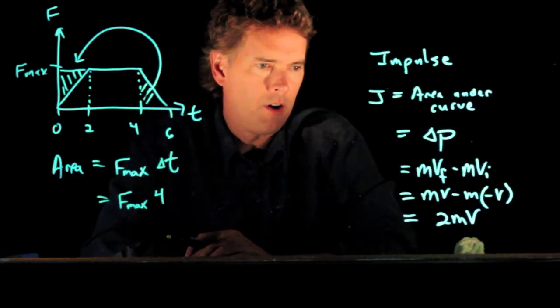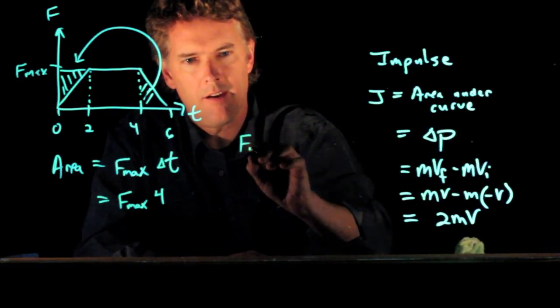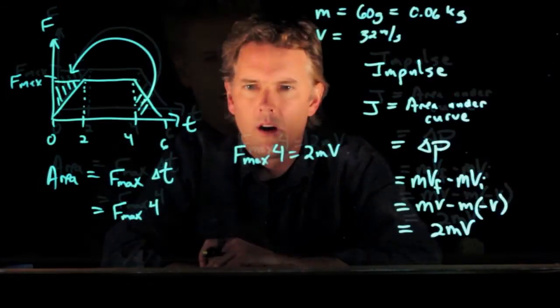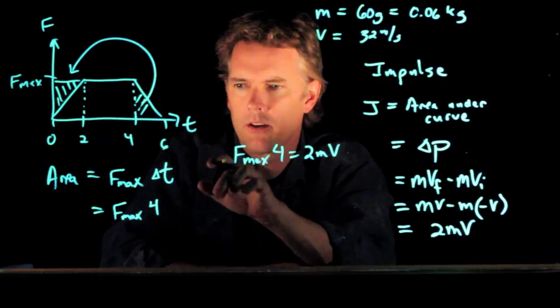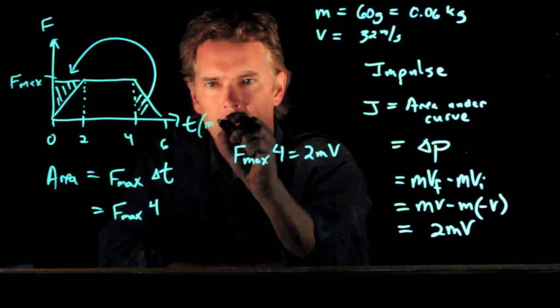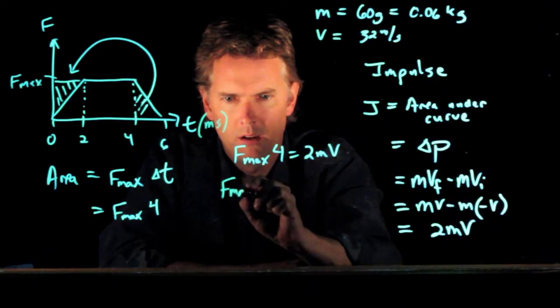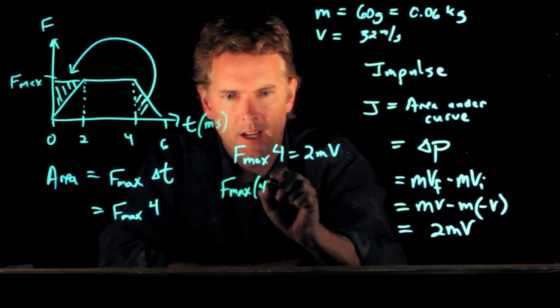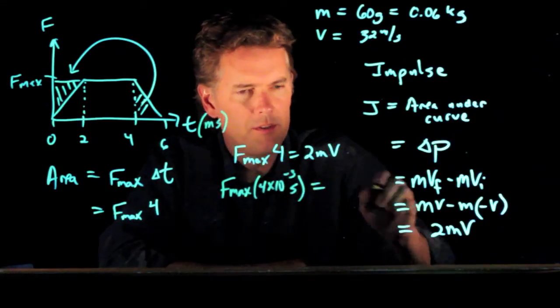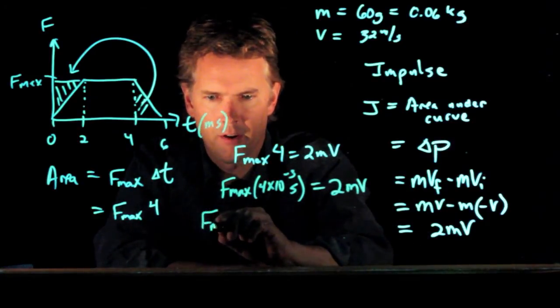And now it looks like we have all the information we need. Okay. 2MV is equal to F max times 4. Okay. So we just calculated that the area under the curve was equal to F max times 4. If you look at the units here, this is milliseconds. So this should be 4 times 10 to the minus 3 seconds. And that's equal to this twice times the mass times the speed V. And so now we can solve this for F max.